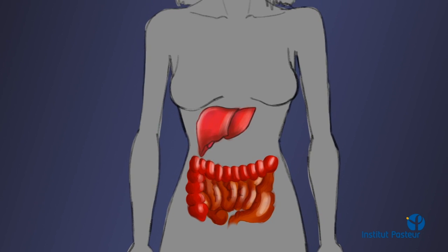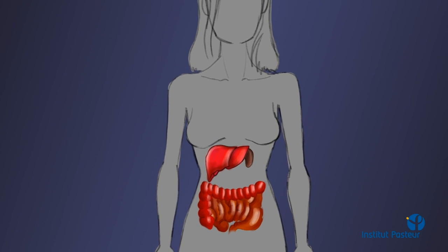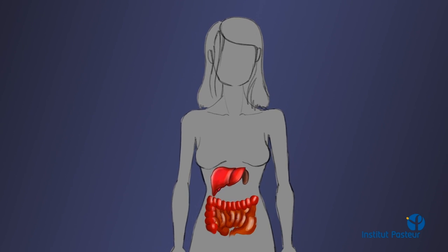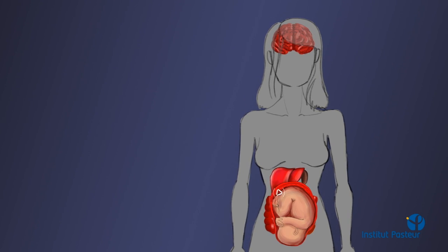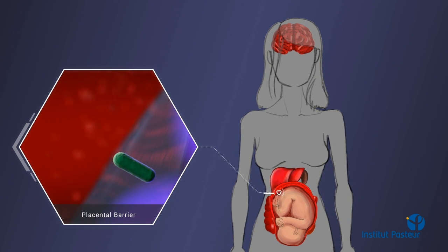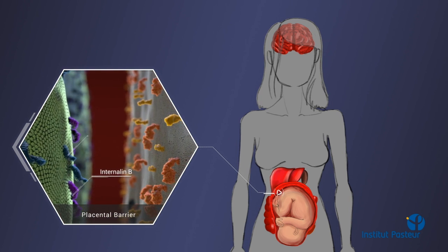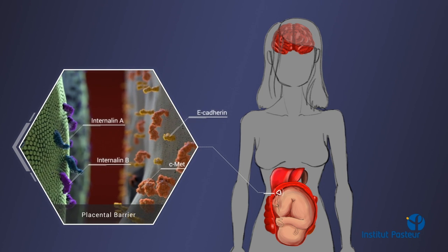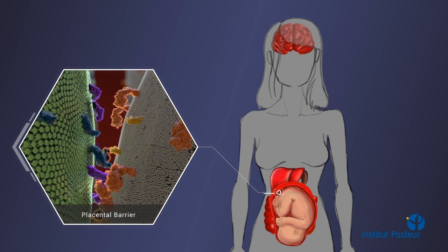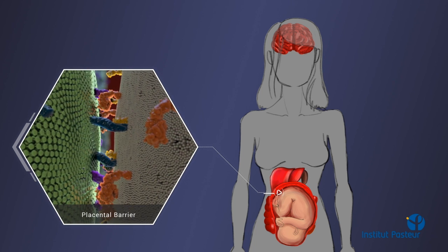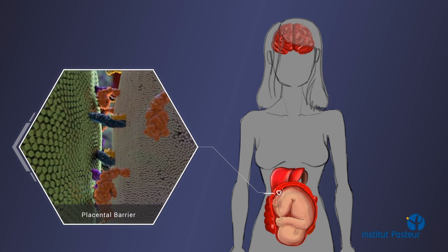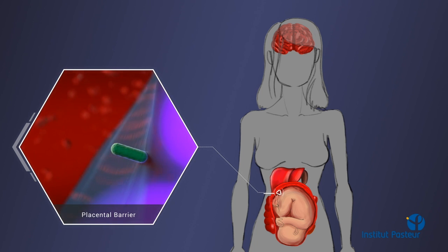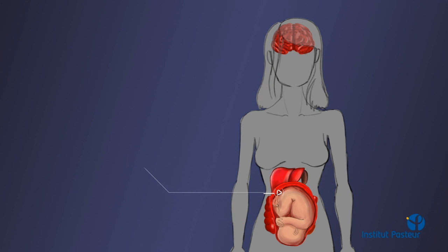The bacteria then spread to the liver and spleen. It is also possible for Listeria to cross the blood-brain barrier and the placental barrier. At the syncytiotrophoblast, the bacterium binds to two surface receptors, E-cadherin and C-Met, via two surface proteins, internalin and internalin B respectively, allowing traversal of the placental barrier and infection of the otherwise protected fetus.